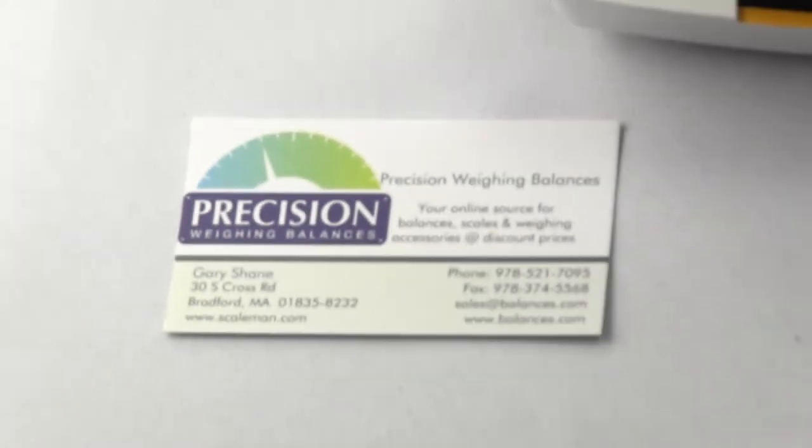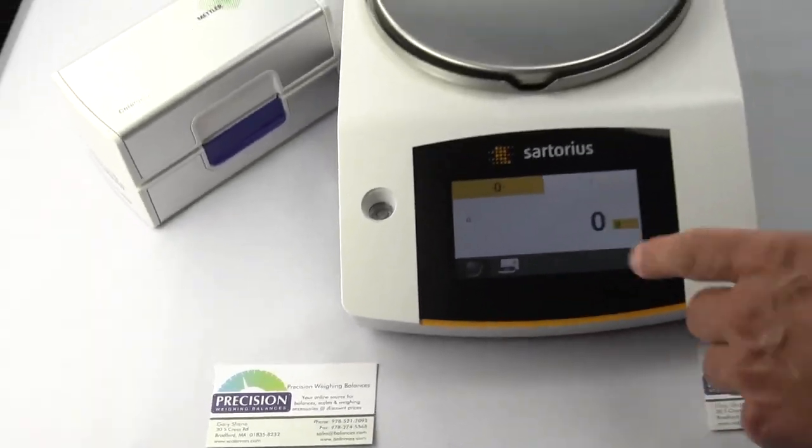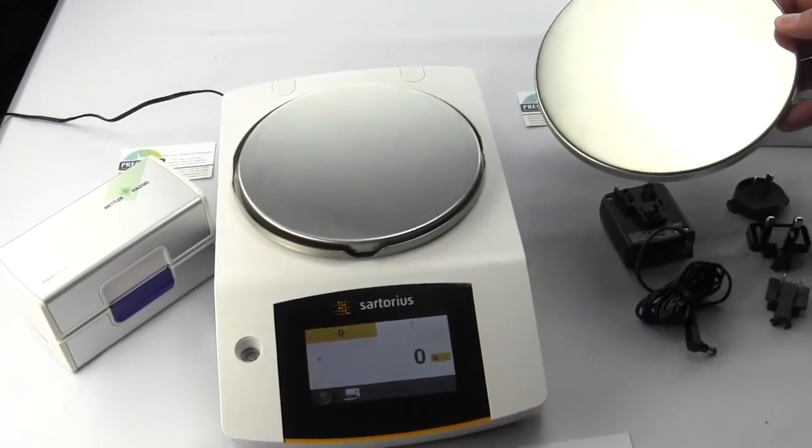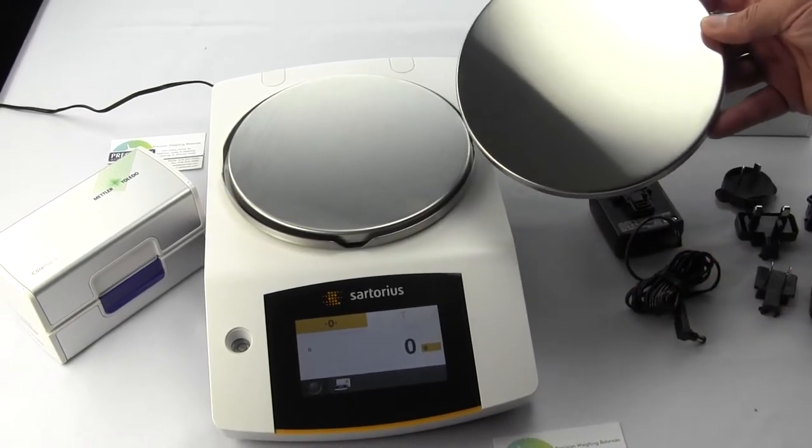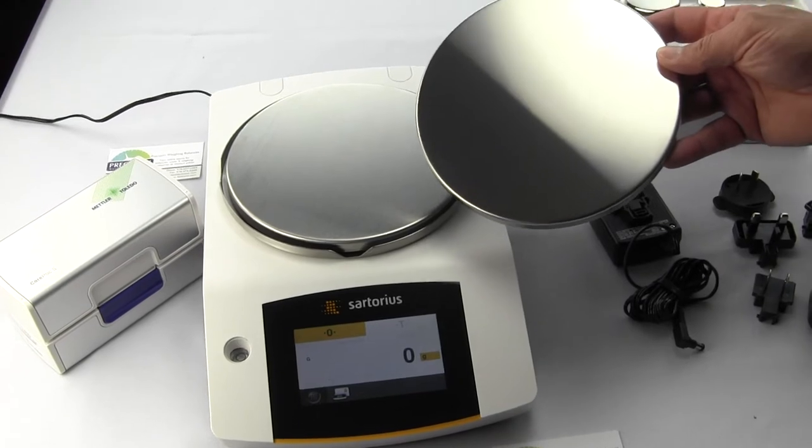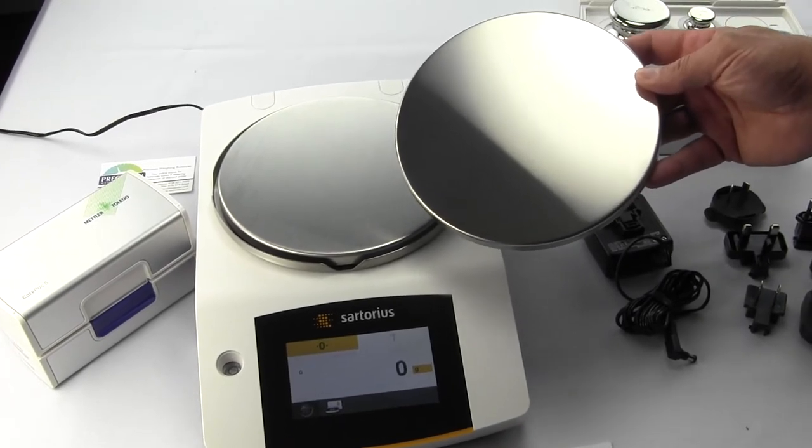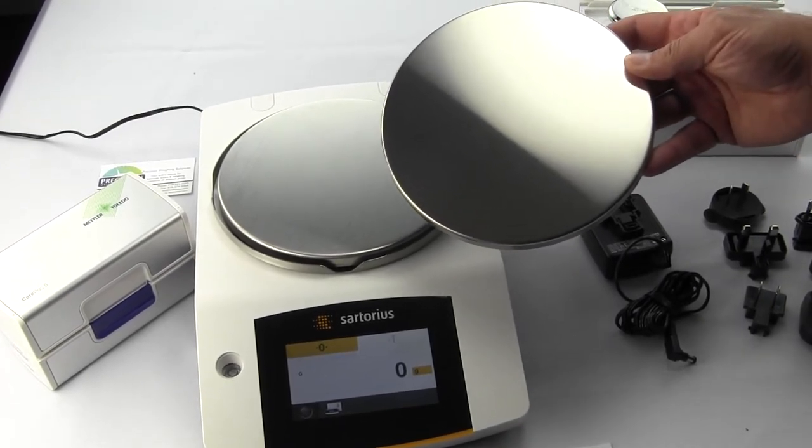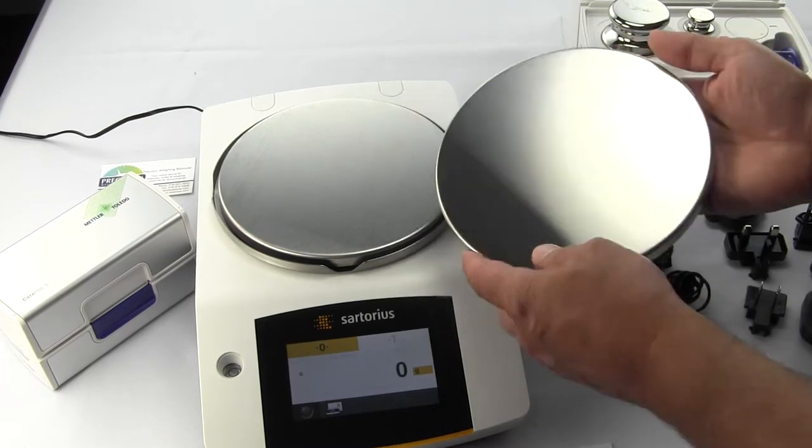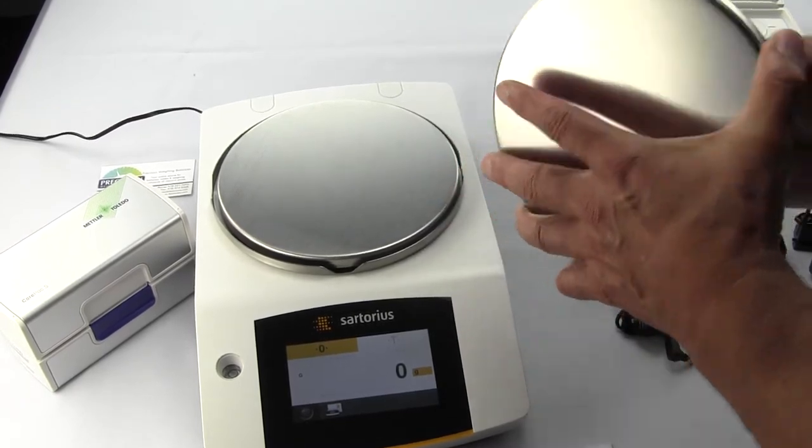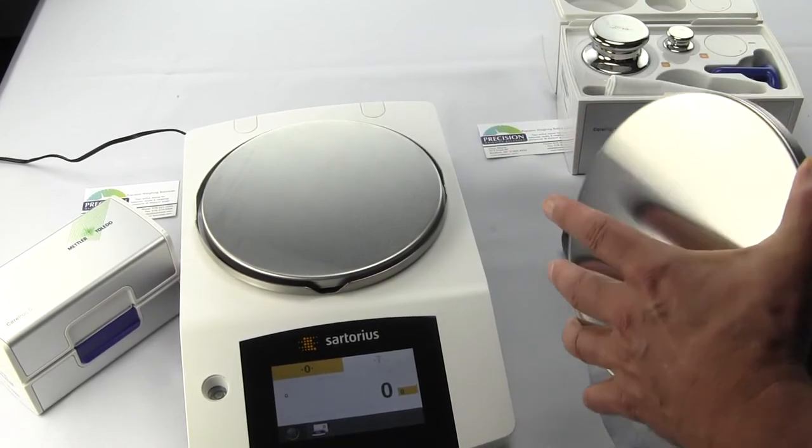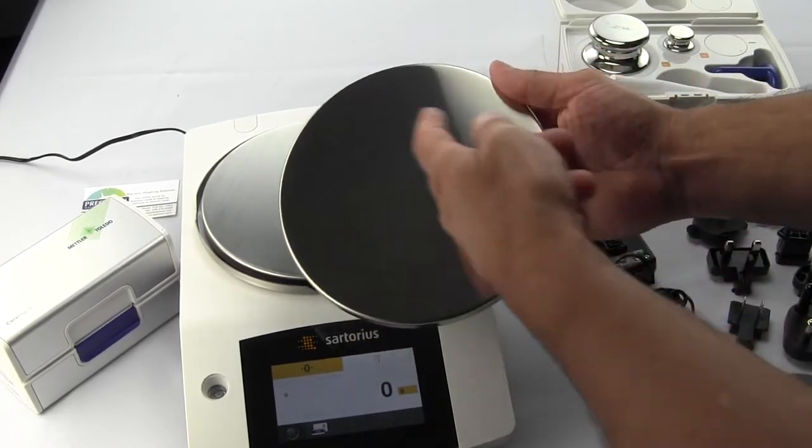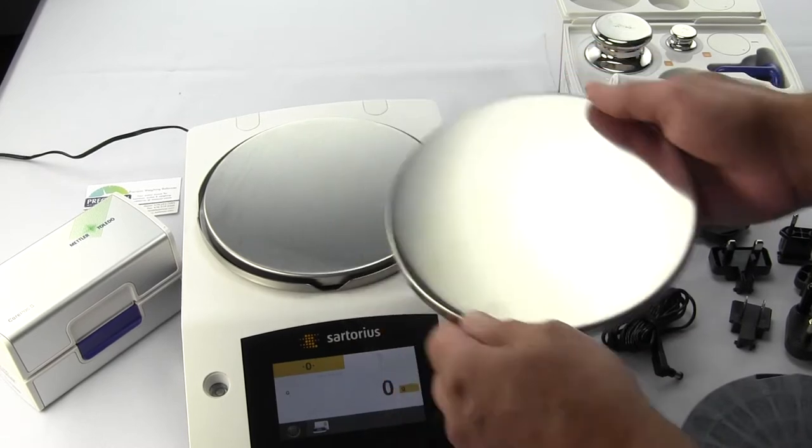In regards to the Practum precision scales, this model is to 1 gram. These models have a nice large round pan—this is a 7 inch or 180 millimeter diameter pan. It's a nice stainless steel pan with a pan support underneath, so you can easily clean your platform.